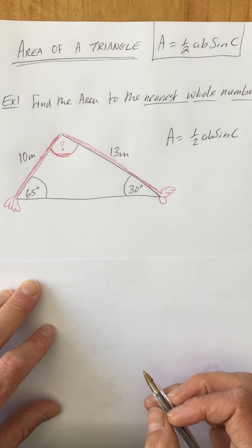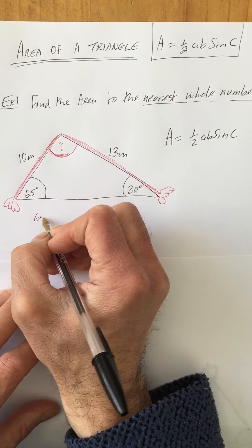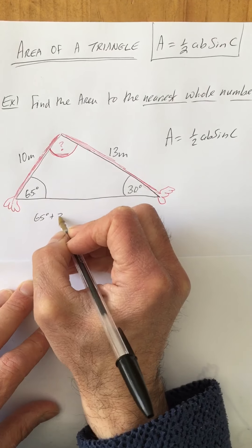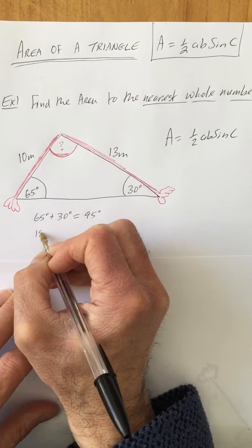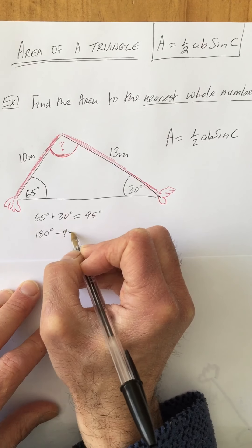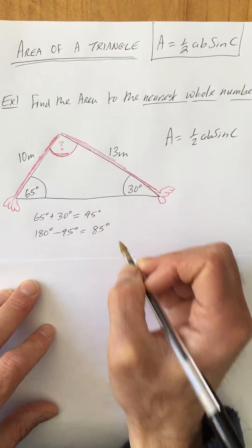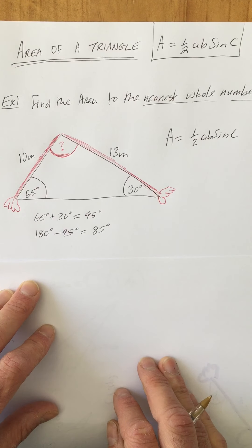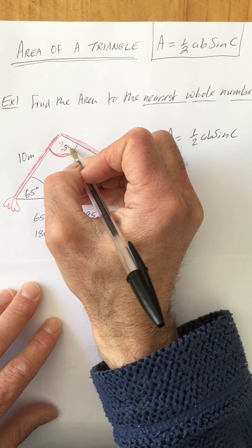Yes, they add up to 180 degrees. So I must do a little sum first of all. I say 65 degrees plus 30 degrees—that adds up to 95 degrees. And then I get 180 degrees and take away 95, and that is 85 degrees.